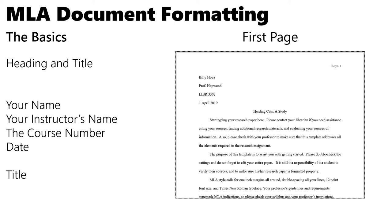Let's talk about the first page of your report. Your first page should start with your name, followed by your instructor's name, the course name and number, and the date. On the next line, centered, should be the title of your report. For example: Billy Hoya, Professor Hopwood, Library 3302, 1st of April 2019, and then the title 'Herding Cats: A Study.' Note that sometimes professors will modify this — make sure you listen to your professor if they want the first page done a little differently.